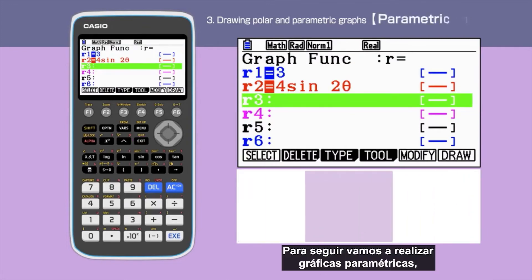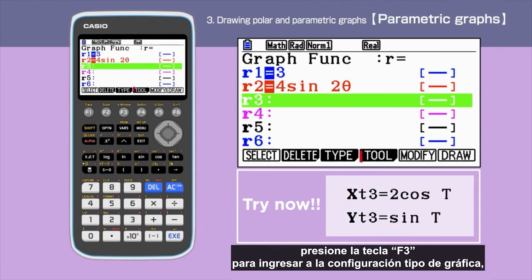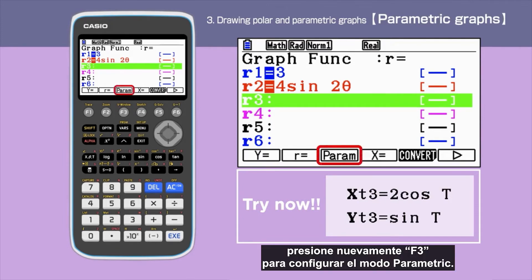Next, we are drawing parametric graphs. Enter F3 to start the parameter command. Press F3 again to set the calculator to parametric mode.